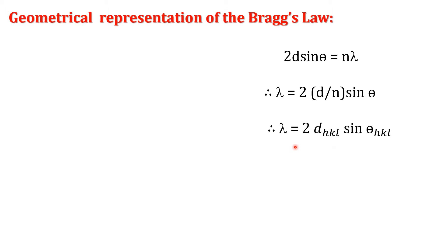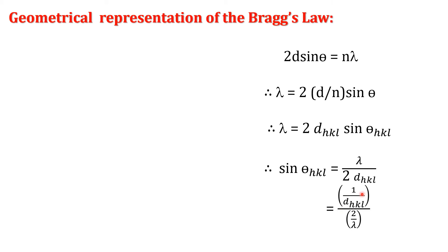Therefore, the modified term we write as lambda = 2*d(hkl)*sin(theta(hkl)). From that, we simplify the sin term: sin(theta(hkl)) = lambda / (2*d(hkl)), which further simplifies to (1/d(hkl)) divided by (2/lambda).